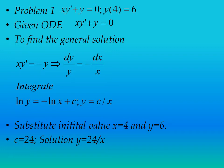Now substitute the initial value: x = 4 and y = 6. Substituting these values we get c = 24. So the particular solution is y = 24/x. This is the particular solution of the given ordinary differential equation.